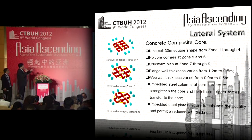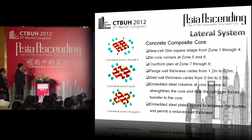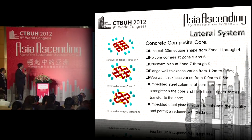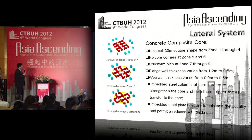The concrete composite core is approximately 30 meters by 30 meters, with supercolumns on both sides. There is a cruciform plan at Zones 7 through 9, and no core corners at Zones 5 and 6. From Zone 1 through Zone 4, the core wall is 30 meters by 30 meters.